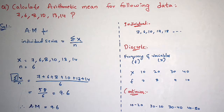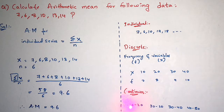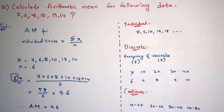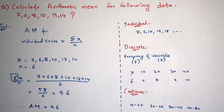For continuous series, there will be the presence of classes — for example, 10 to 20 is one class, 20 to 30 is another class, 30 to 40 and 40 to 50 are other classes. In this way, classes will be represented in the question data, and then you can identify that the question belongs to continuous series. So in this way you can identify whether the question belongs to individual, discrete, or continuous series.